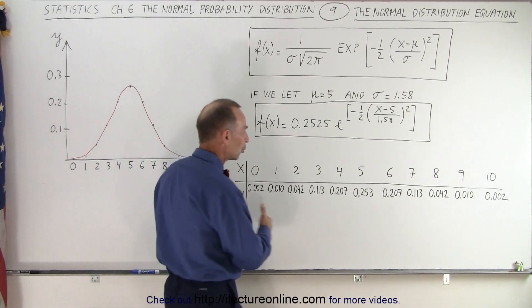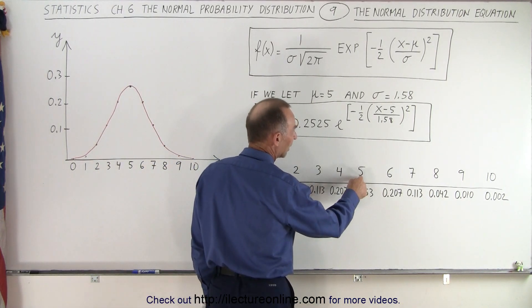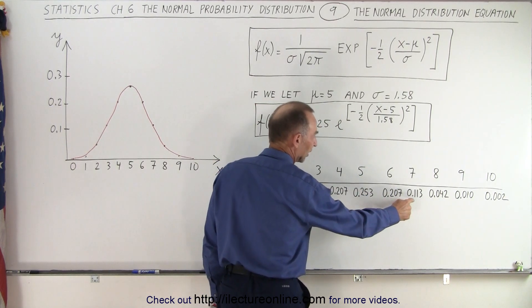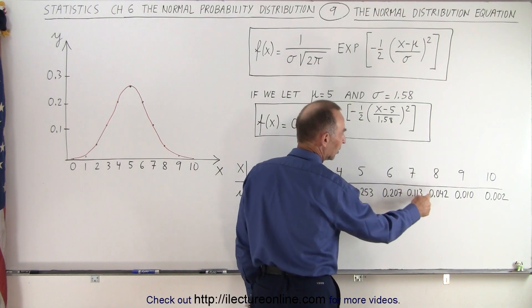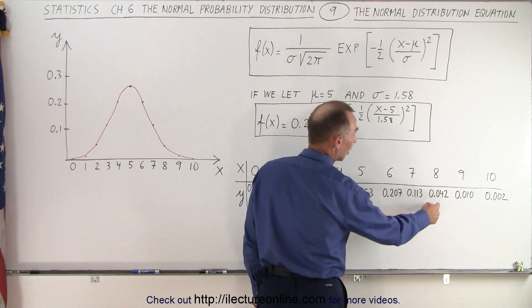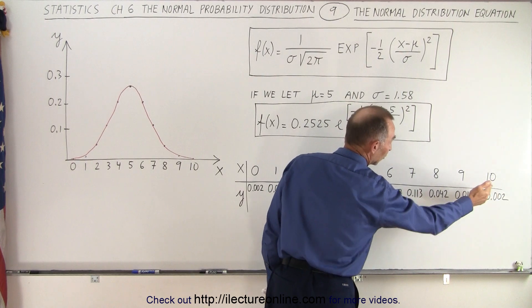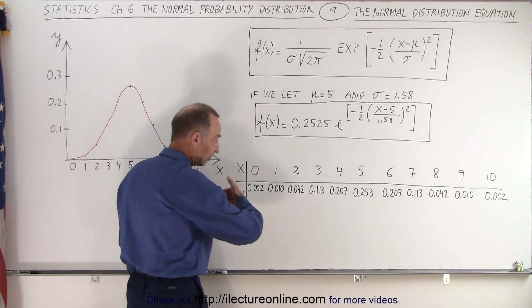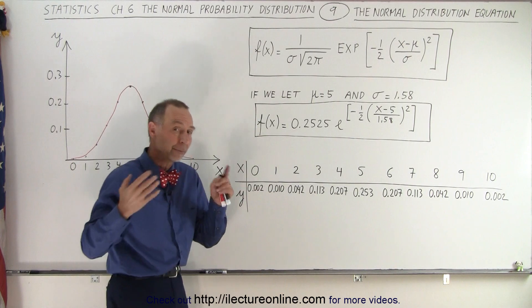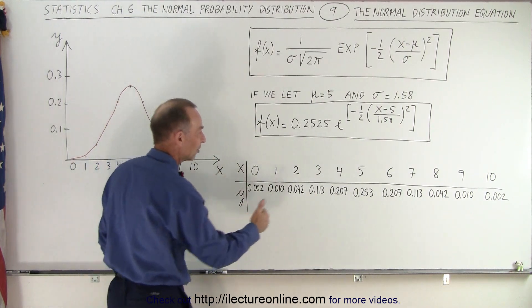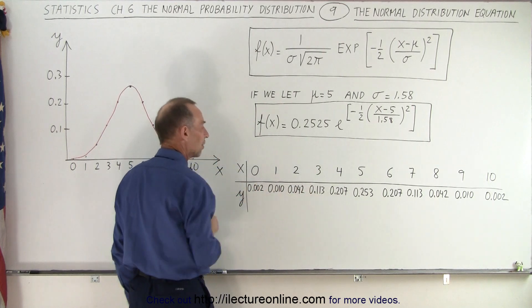Notice that there's about a 25% probability that we shoot a 5, about a 20% probability we shoot a 6, about an 11% probability to get 7 baskets, about 4% to get 8 baskets, 1% to get 9 baskets, and smaller than 1% to get 10 baskets. Same on this side. Remember that the normal probability distribution is symmetric about the center line. So, we have the same probabilities going in this direction.